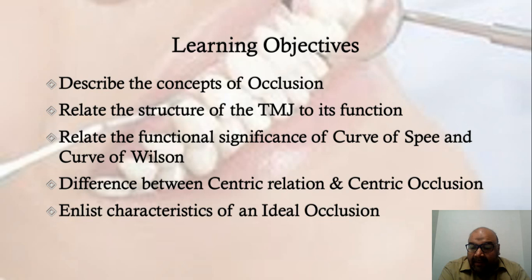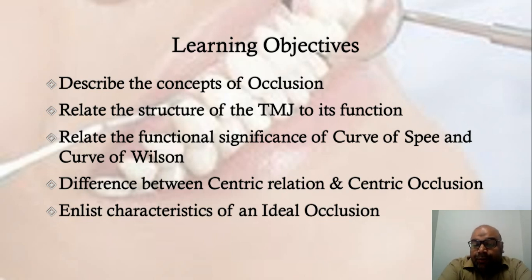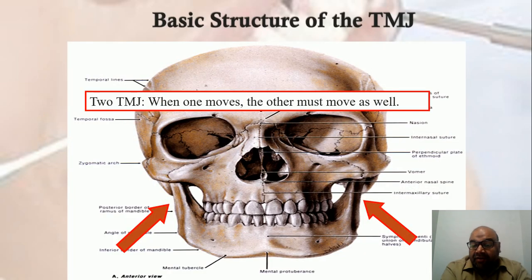We have already discussed the structure of the temporomandibular joint and its relation to function. The temporomandibular joint is a very complex structure and its function is not totally known. Students will also be able to relate the functional significance of the curve of Spee and the curve of Wilson, know the difference between centric relation and centric occlusion, and enumerate the characteristics of an ideal occlusion.